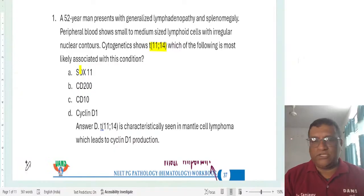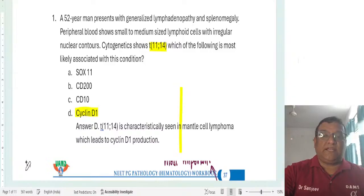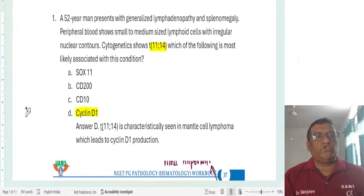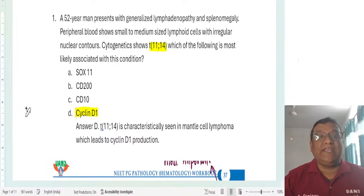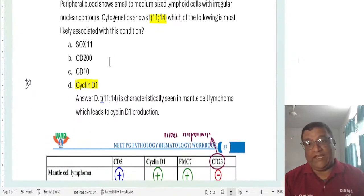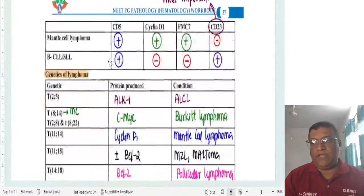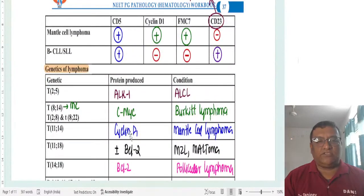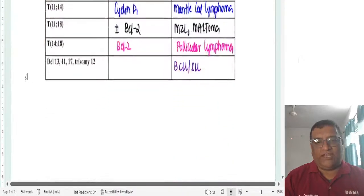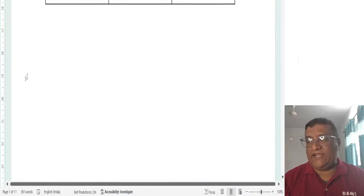Two options were very close here: SOX11 and cyclin D1. Answer would be cyclin D1 because of 11;14 translocation there will be cyclin D1. If you remember I discussed this in the class also that if you are going to get two options cyclin D1 and SOX11, where do we use SOX11? SOX11 we use it in cyclin D1 negative mantle cell lymphomas. We don't use it in cyclin D1 positive mantle cell lymphomas. This was the table from which this question came, same straight question. I kept telling this you will end up getting either marker or the genetics of the lymphomas as a question. This was your first question from the class notes, in fact I had given this in one of your grand test as well.